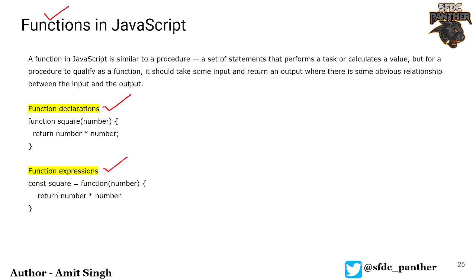In the function expression, we use a variable declarator like let, var, or const, then put the name of the function, followed by an equals sign and the function itself. So everything on the right side is assigned to a variable — for example, x_square — and since it's a function, x_square also becomes a function. These are the two main ways to declare a function in JavaScript.